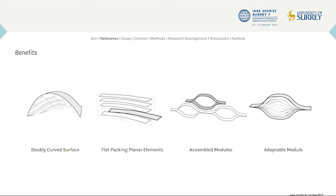Bending active systems are unique because they allow for the creation of complex curved geometries from initially planar elements, making them easier for prefabrication and assembly on site. This presents an alternative for the complex fabrication processes currently used for the production of curvilinear architectural forms, which often employ subtractive fabrication processes.